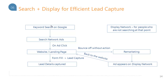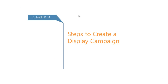What about the scenario when the person is not searching but fits the persona of your buyer profile? That is where your normal display campaigns come in. By using keyword targeting, topic targeting, or interest targeting, you can catch hold of people who might not be searching at that point in time but might be interested in what you have to offer. This search-plus-display combination can really help you capture lead details efficiently.